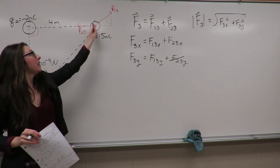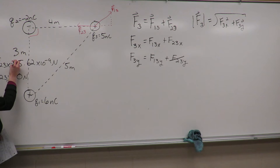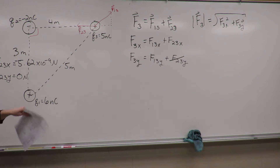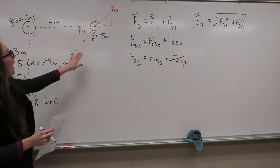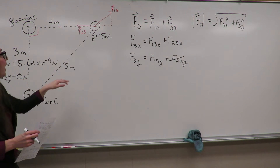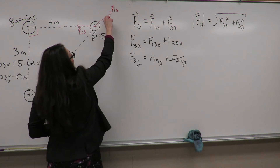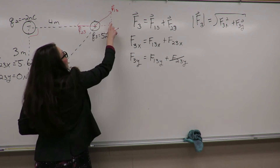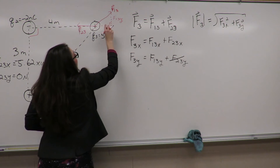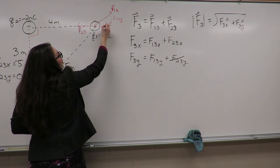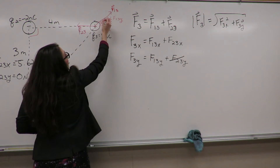F23 is pointing in the negative x direction toward q2, so F23x is indeed negative: −5.62×10⁻⁹ N. Now we work on F13. This vector has both an x component F13x and a y component F13y, with some angle theta between them.